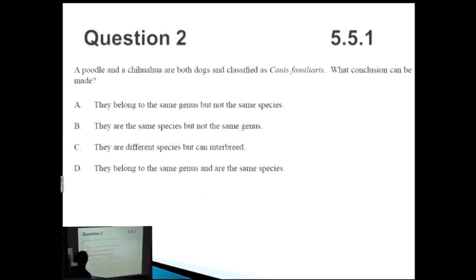Question two: a poodle and a chihuahua are both dogs and classified as Canis familiaris. What conclusion can be made? They're of the same species. Remember that the thing with a capital C is the genus while the second one which is not in a capital letter is its species. So the species is familiaris but the genus is Canis. They belong to the same genus and are the same species.